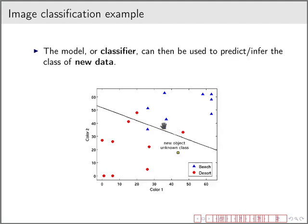So now that we train the model, it can then be used to predict or infer a class of new data. If I just plot here, and in this case it's a yellow square because I don't know the class, what would be the class assigned? Well, the class here is desert because this point lies below the line. So this is what we are going to use as a reference.